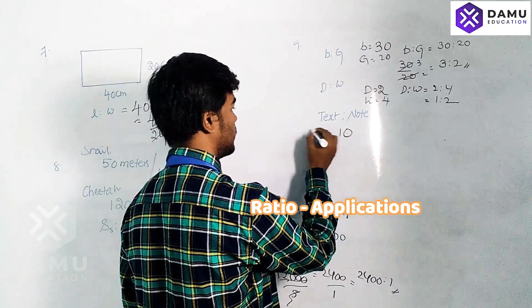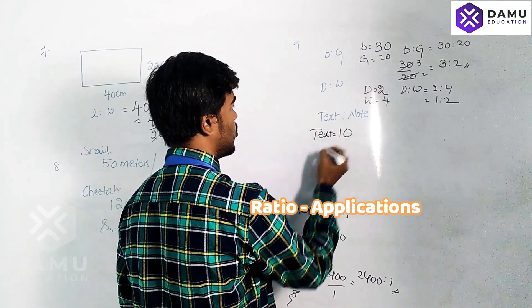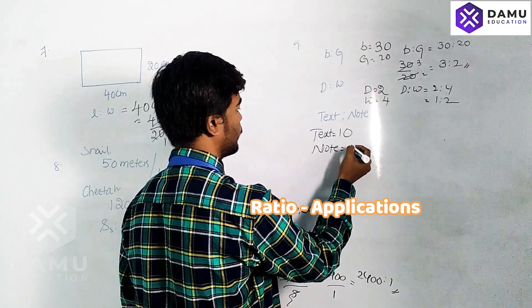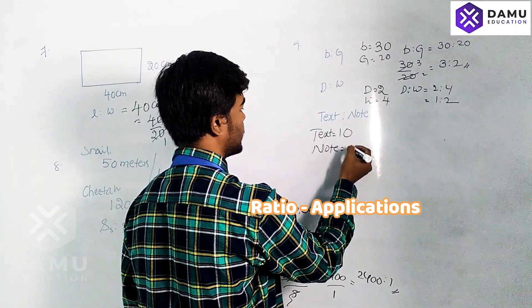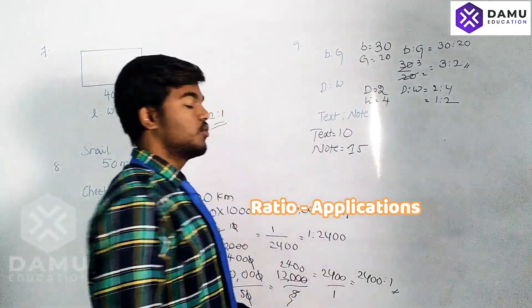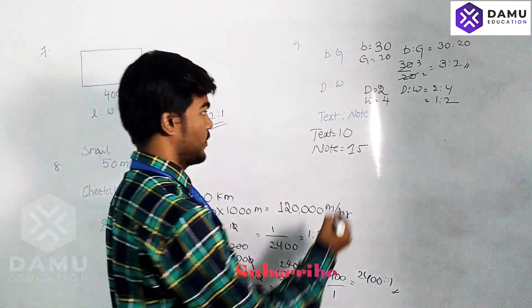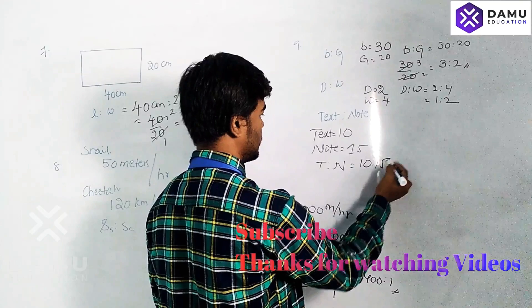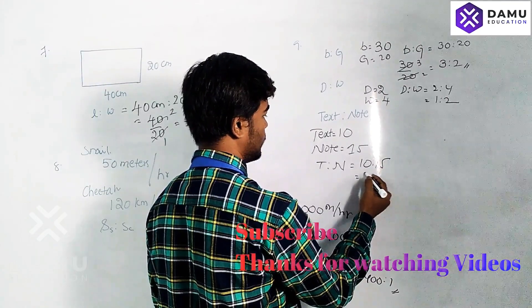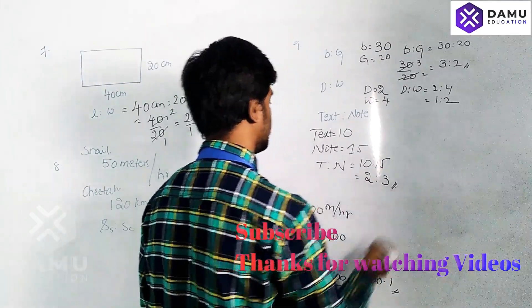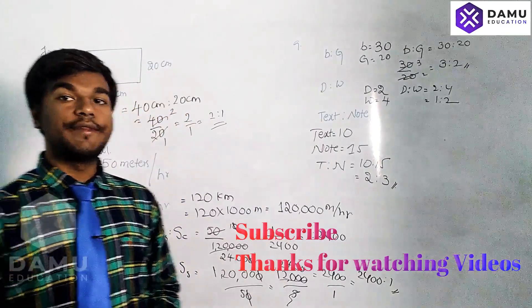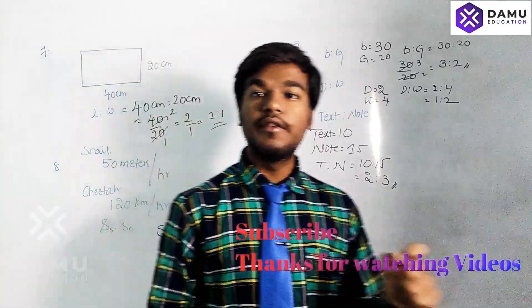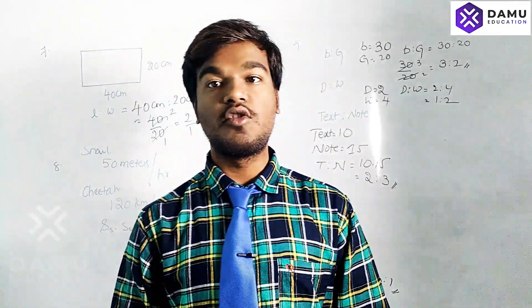Textbooks will be around 10, notebooks will be around 15. The text to note ratio will be 10 is to 15. Dividing by 5, that is 2 is to 3. Thanks for watching our videos. Please subscribe and click the bell icon.